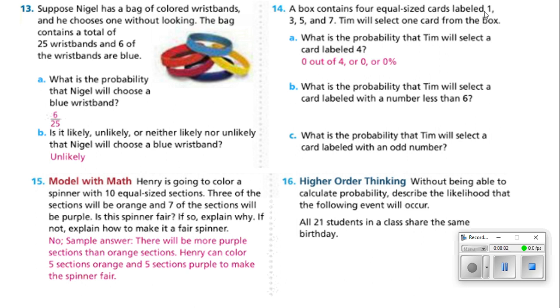Part B says, what is the probability that Tim will select a card labeled with a number that is less than 6? Well, out of these labels here, we've got 1, 3, 5, and 7. And it was 4 equal sized cards. So, he will select a card labeled less than 6. There's 3 out of 4 that are going to be less than 6. So, 3 out of 4 is 3 over 4. 3 divided by 4 will give you 0.75. Move that decimal over twice. That's a 75% chance that you will select a card labeled with a number less than 6.